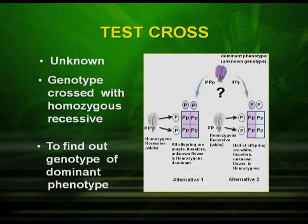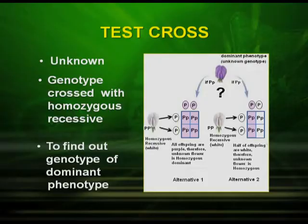We have studied about homozygous and heterozygous conditions. But have you ever thought how to find out the genotype of a heterozygous condition? Because the heterozygous condition can be written as capital P capital P or capital P small p. The technique we use is called a test cross. Basically, a test cross is used to determine the unknown genotype of a dominant phenotype, and it is crossed with a homozygous recessive.